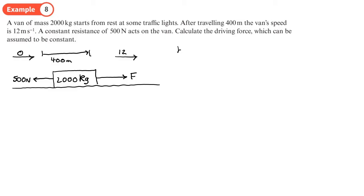Work done is change in kinetic energy and also equals force times distance. In this case, F doesn't equal 500, otherwise the van wouldn't move. F has got to be greater than 500. The pulling force minus the 500 resistive force times distance equals the change in kinetic energy. So F minus 500 times 400 equals the change in kinetic energy.